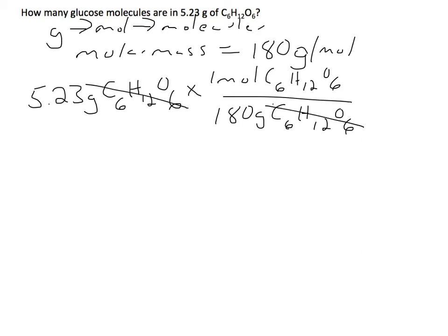And so now we can convert the moles to the molecules, and we know that in one mole of C6H12O6, that we have to have the 6.022 times 10 to the 23rd molecules of C6H12O6.